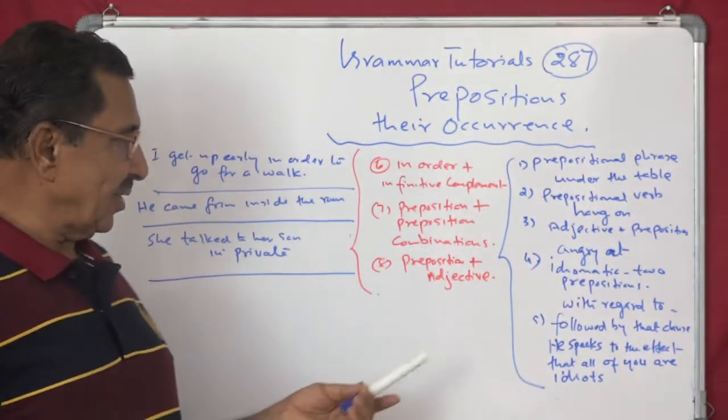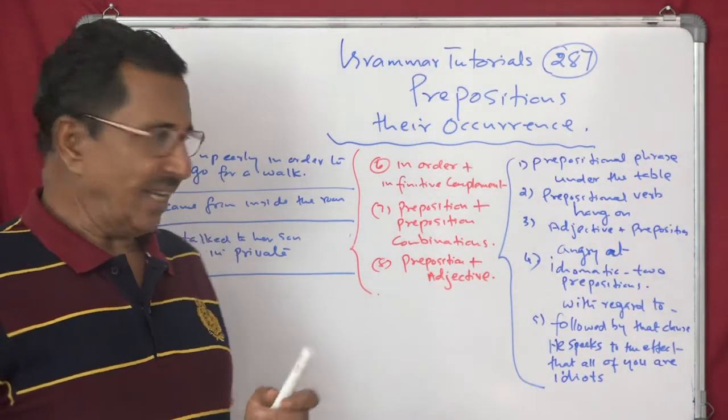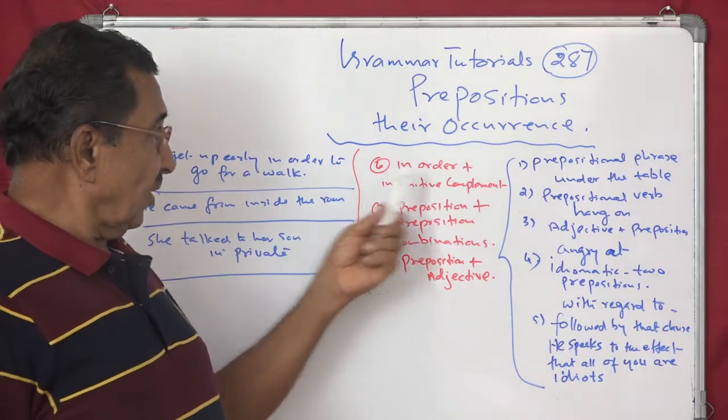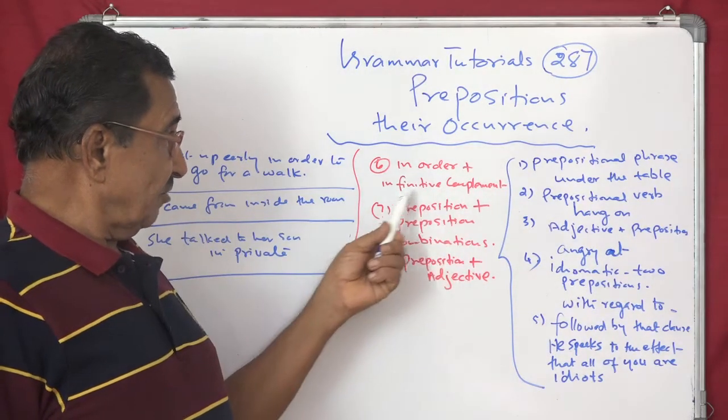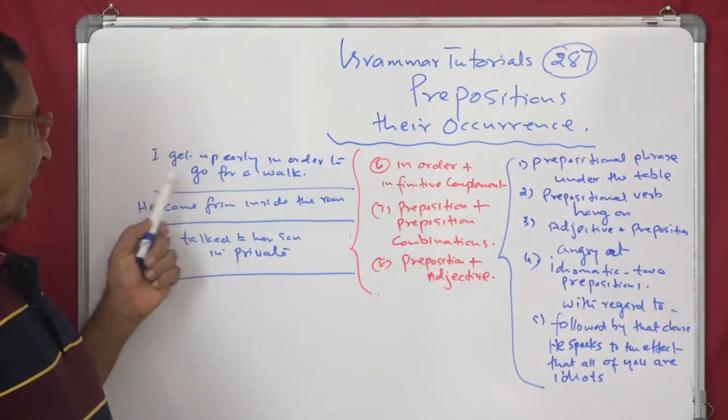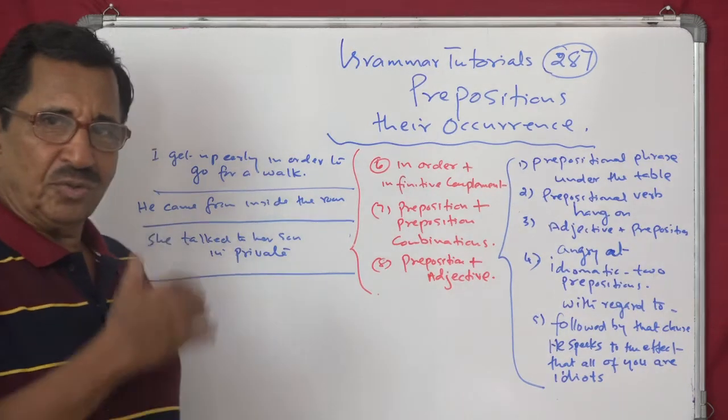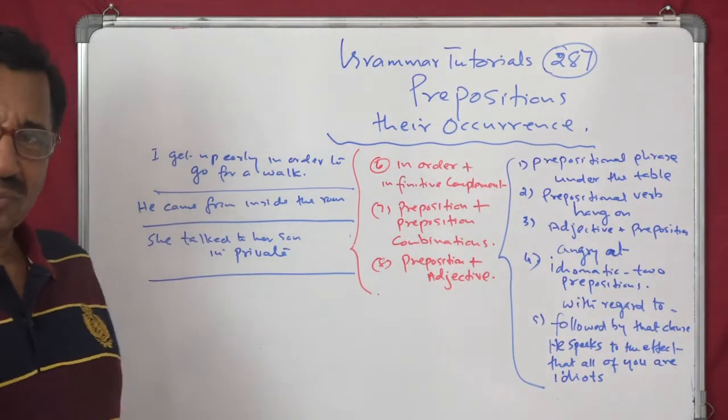So, today you will see three more and that will be the end of this area. In order plus infinitive complements. For example, you have, I get up early in order to go for a walk. That is infinitive complements.